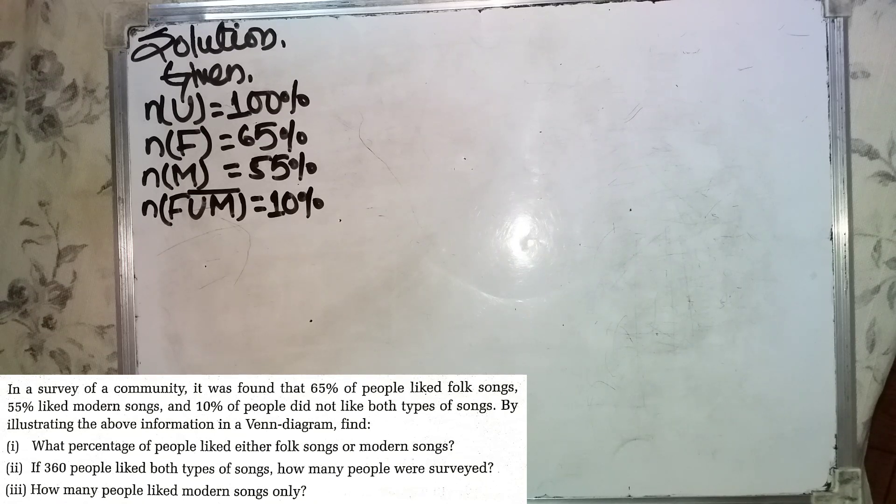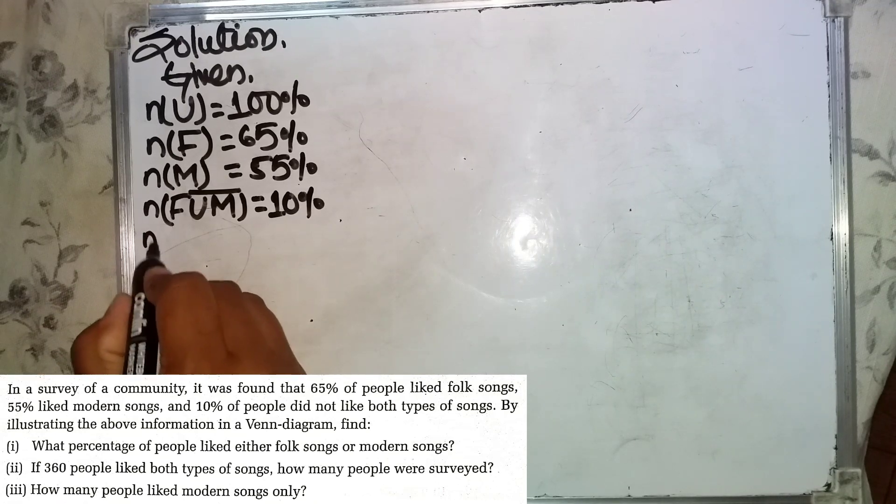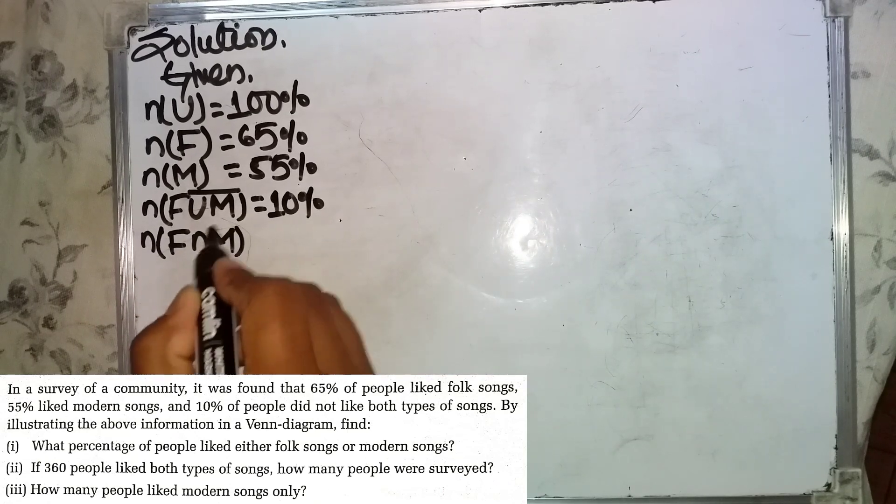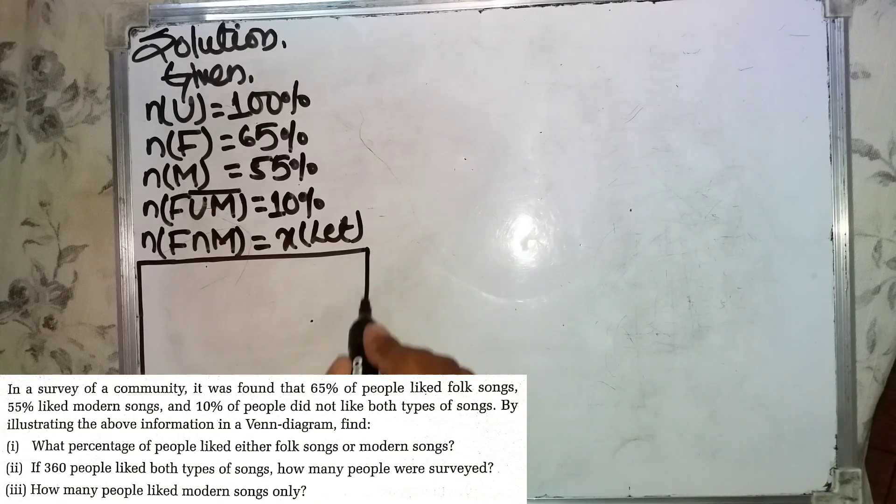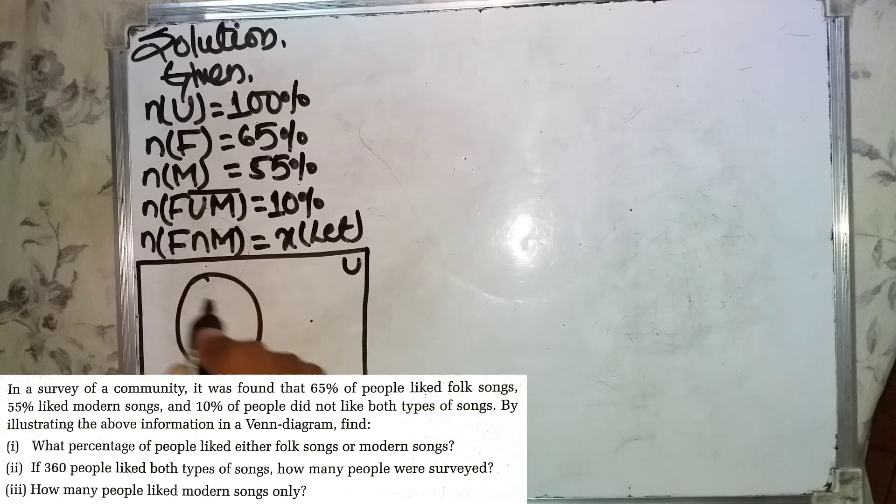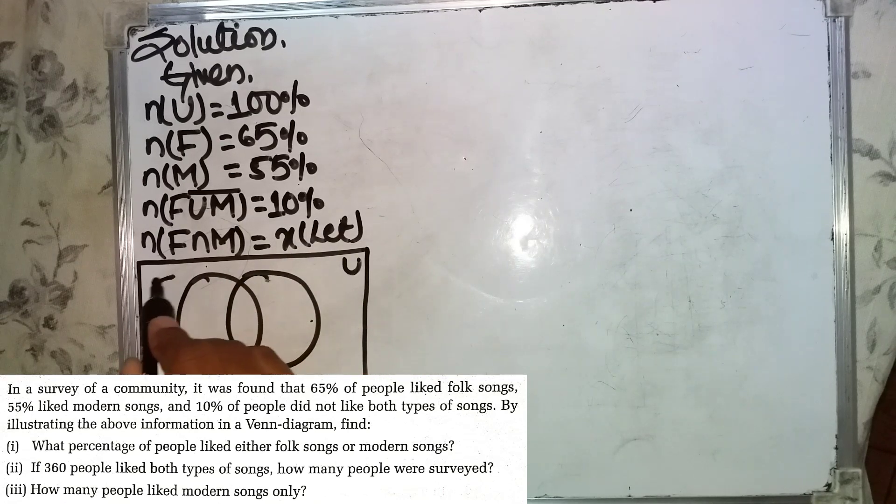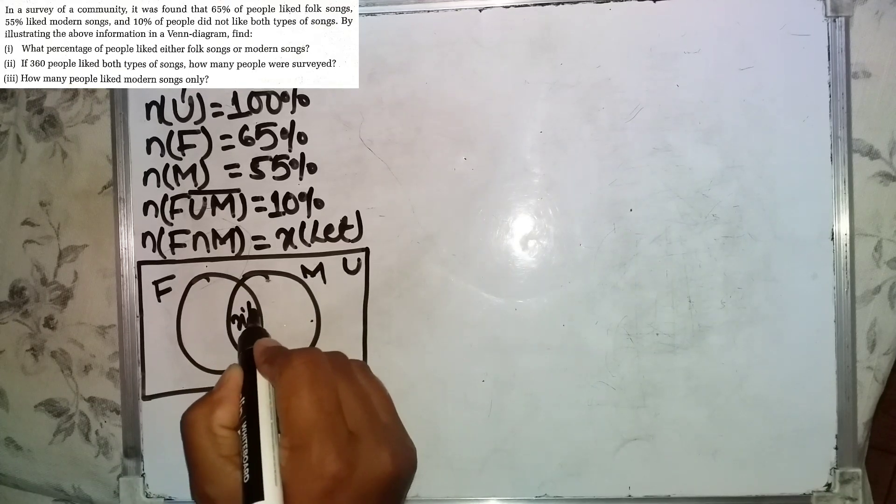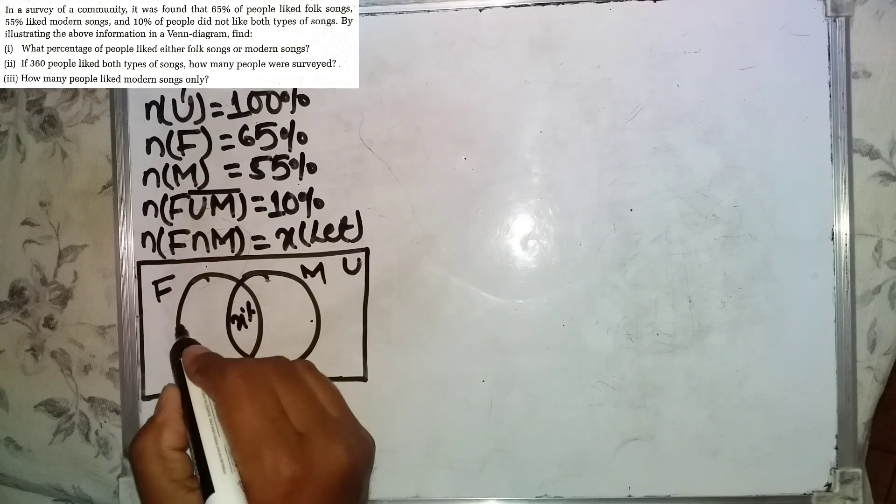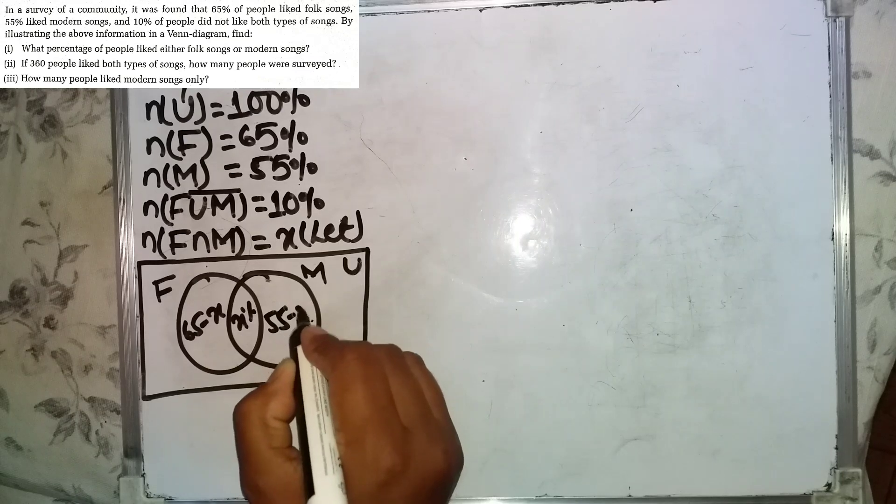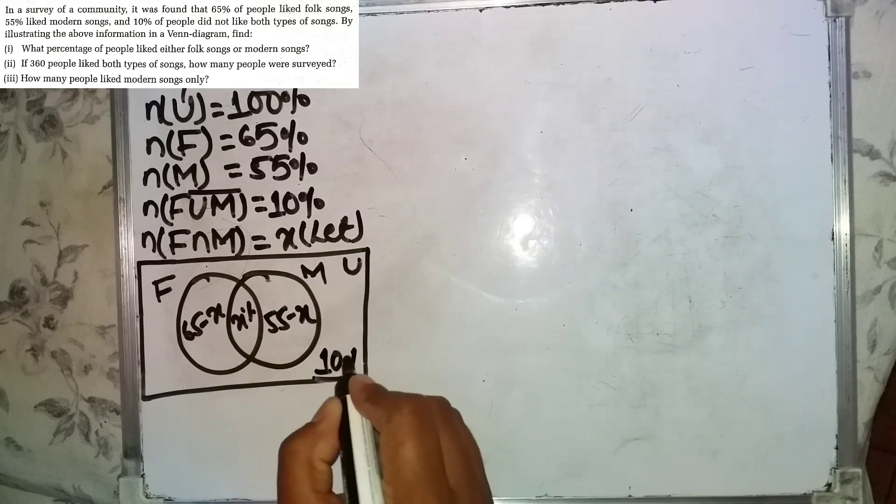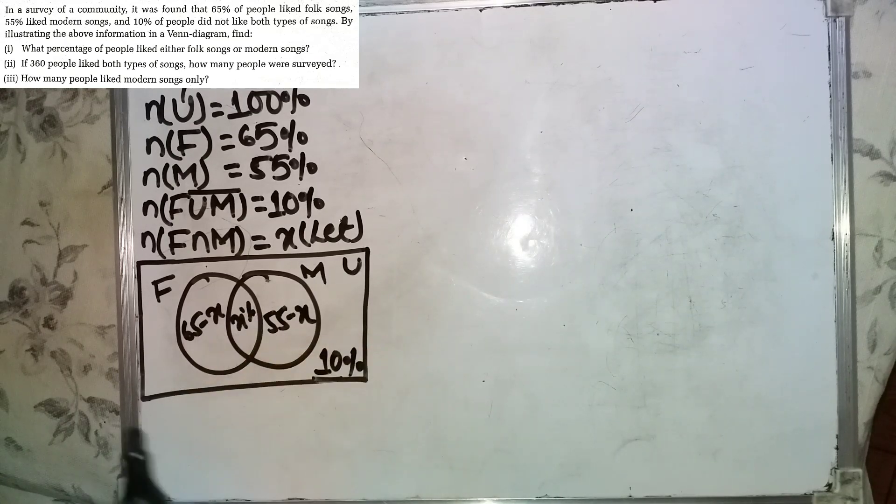The question asks us to illustrate the Venn diagram first. So, universal set with F for folk songs and M for modern songs. The intersection is X percent, F has 65 minus X percent, M has 55 minus X, and those who don't like either is 10 percent.